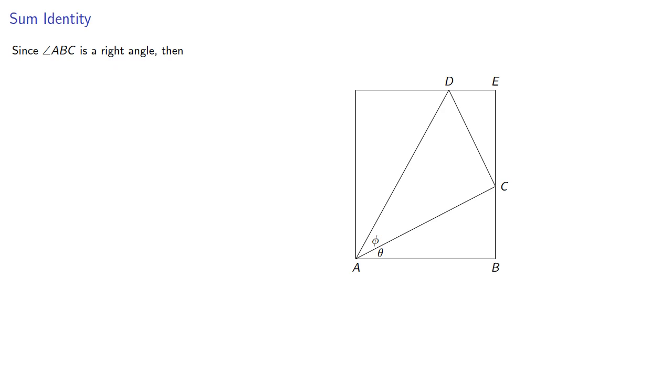Now, since ABC is a right angle, then we know the sum of the angles CAB and ACB is 90, and so angle ACB must be 90 minus theta.